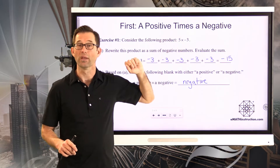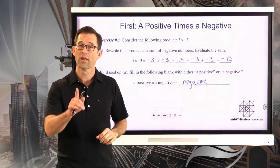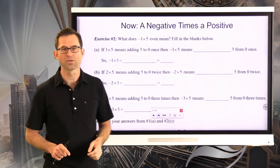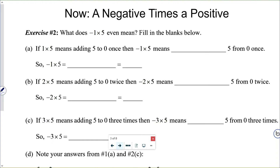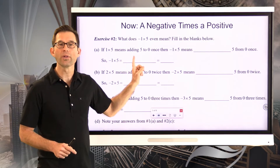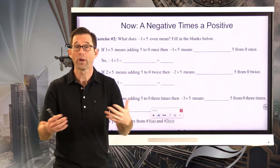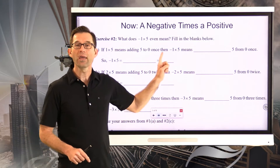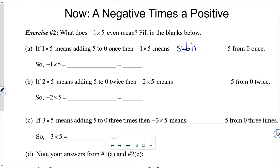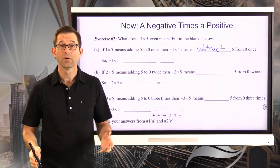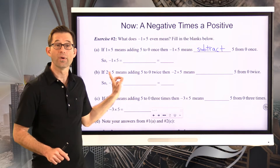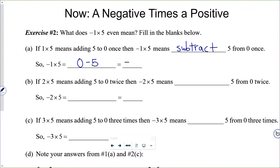Now if we can look at a positive times a negative, we can flip-flop those and look at a negative times a positive — that's our second case. This is trickier because we have to answer a fundamental question in exercise 2: what does negative 1 times 5 even mean? Well, 1 times 5 literally means I'm going to add 5 to 0 one time. So negative 1 times 5 should mean that I'm going to subtract 5 from 0 once, which gives negative 5.